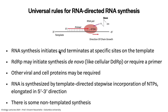RNA-directed RNA synthesis has universal rules. The template, shown in black, has two chemically distinct ends — a five-prime and a three-prime end. The polymerase reads the template in a three-to-five-prime direction and synthesizes a complement in a five-to-three-prime direction. Here you see an RNA polymerase bound to the template, using a primer — shown in red — that is complementary to the template. The polymerase adds bases to the three-prime end of that primer depending on what's on the template.